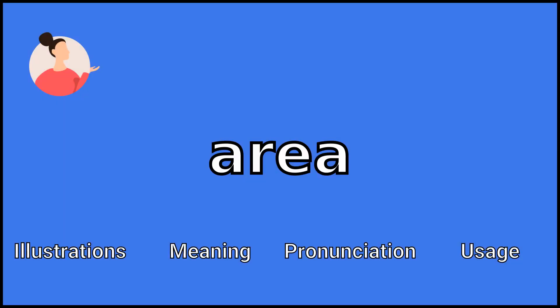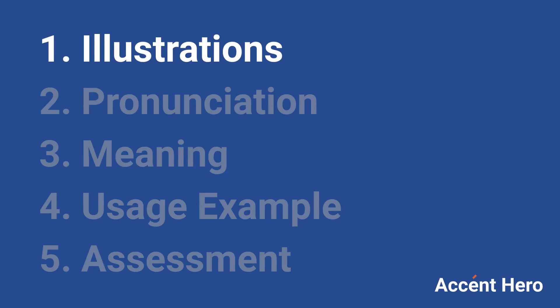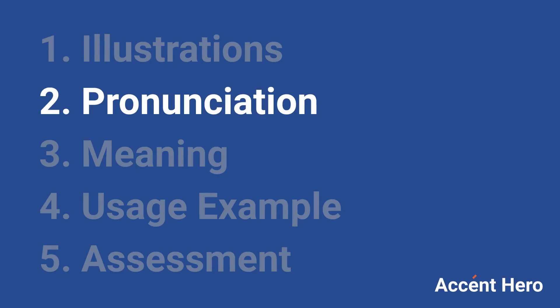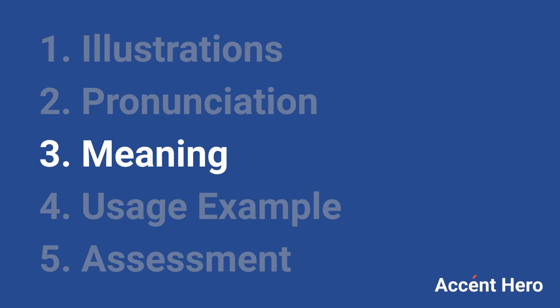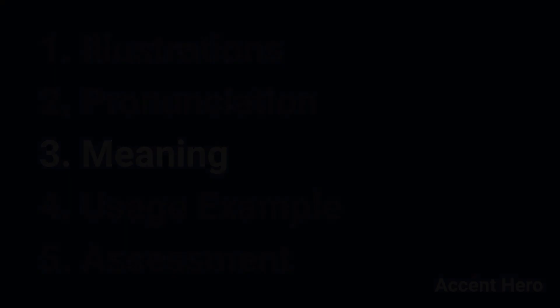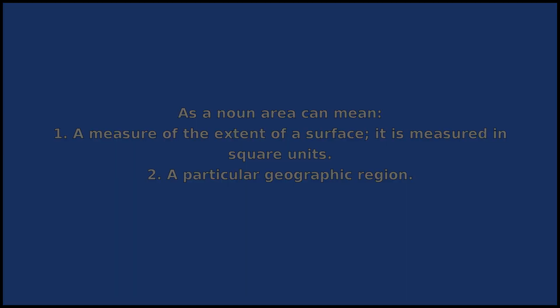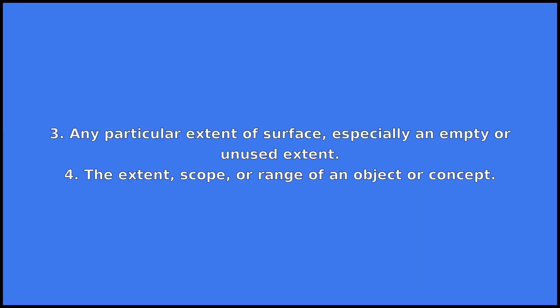Area is a noun. As a noun, area can mean: one, a measure of the extent of a surface, measured in square units; two, a particular geographic region; three, any particular extent of surface, especially an empty or unused extent.